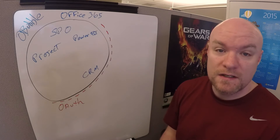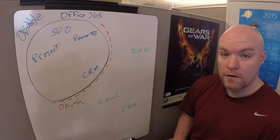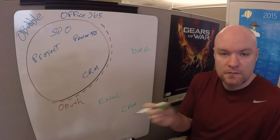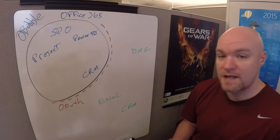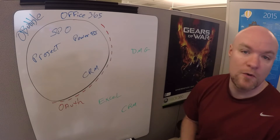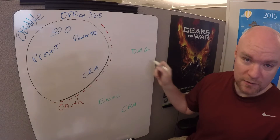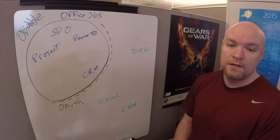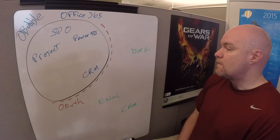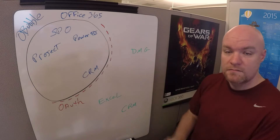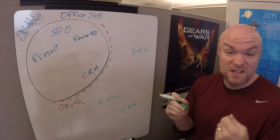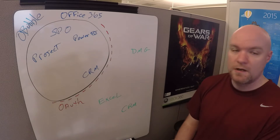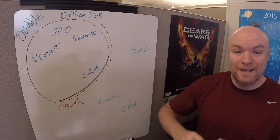We've also got some things outside of the bubble that we need to consider. First, I put Excel up there — think of this as the authoring experience. This could be Power BI Designer, it could be Excel, it could be anything you're using to actually pull data from O365. Next I have the DMG, or Data Management Gateway — whatever gateway we're using in the context of Power BI. This sits on our on-premise environment. The other thing is CRM on-premise — not CRM Online, but actual on-prem CRM.